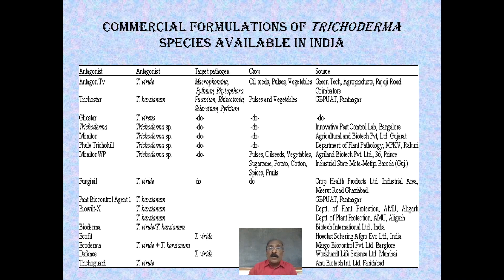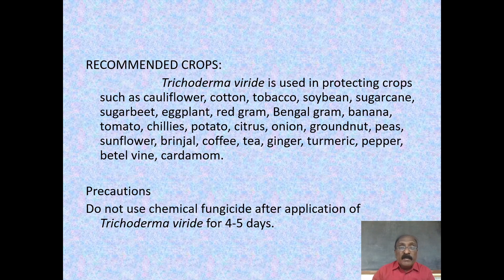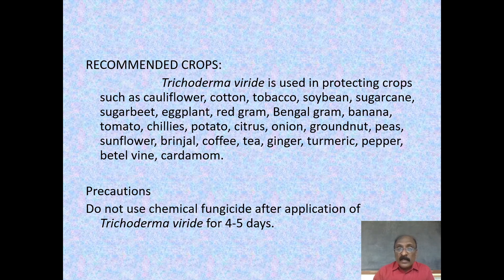These are the various commercial formulations of Trichoderma species available in India, showing target pathogens, target crops, and recommended applications. Trichoderma viridae is used in protecting crops such as cauliflower, cotton, tobacco, soybean, sugarcane, sugar beet, eggplant, red gram, Bengal gram, banana, tomato, chilies, potatoes, citrus, onion, groundnut, peas, sunflower, brinjal, coffee, tea, ginger, turmeric, pepper, beetroot, vine, and cardamom. Precaution: do not use chemical pesticides after application of Trichoderma viridae.